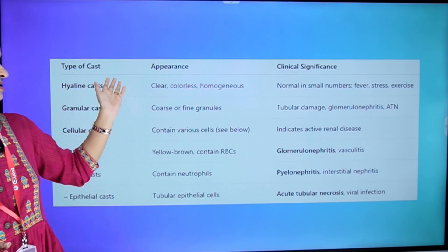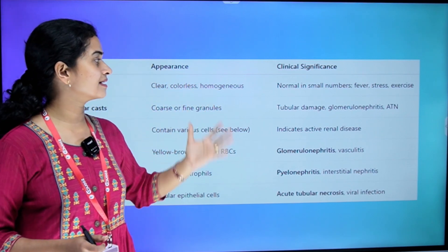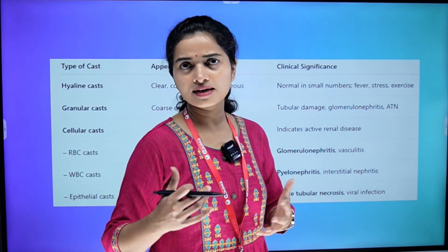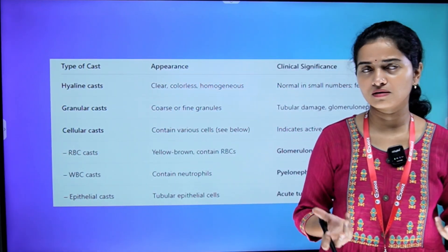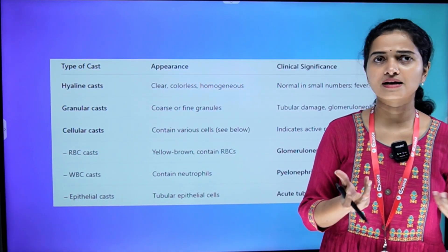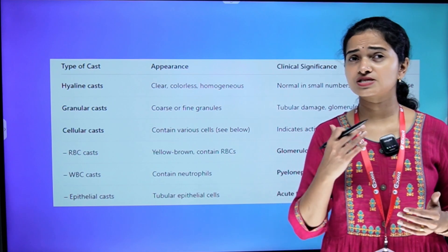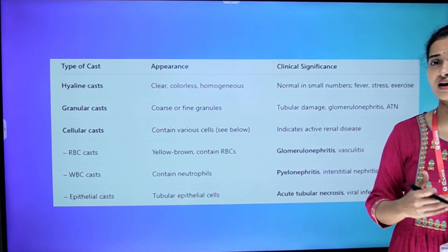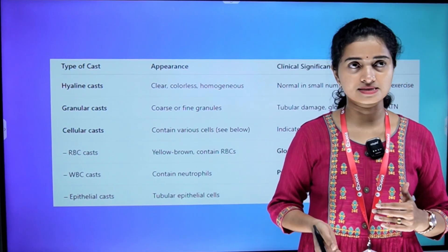First one: hyaline cast. That is clear, colourless, or homogeneous. Normally there is a small number present. If you have fever, stress, or exercise, the hyaline cast number increases.